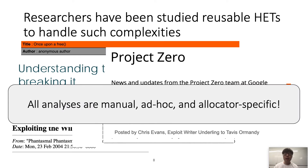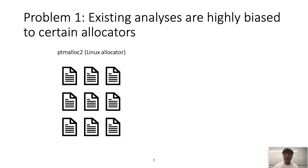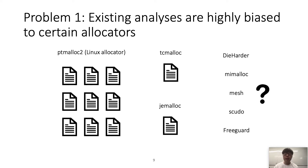There are many works related to heap exploitation techniques. However, all analyses are manual, ad hoc, and allocator-specific. Such manual analyses have several problems. First, existing analyses are highly biased toward certain allocators because of the large amount of manual effort required. Even though many allocators have been developed, researchers have mostly focused on ptmalloc2. There are only a few works related to tcmalloc and jemalloc, and no security analysis for other allocators such as DieHard and mimalloc.